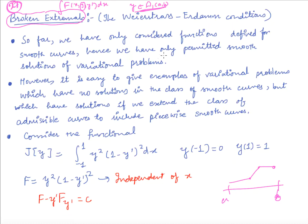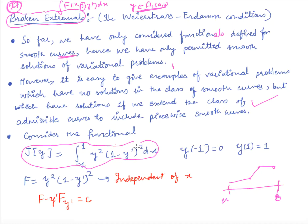So far we have considered functionals defined for smooth curves only. Now we would like to see functionals for non-smooth admissible curves. We will look at an example where we cannot find the solution in the class of smooth functions, but if we look in the class of piecewise smooth functions, we will get an extremum. So considering piecewise smooth extremals is important.